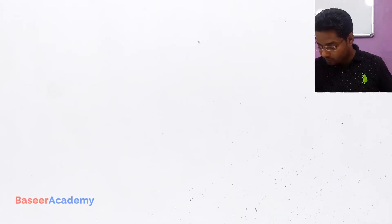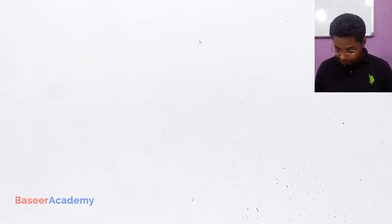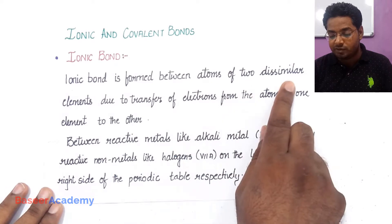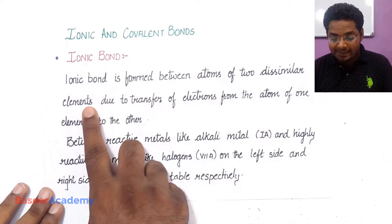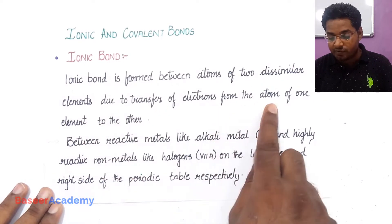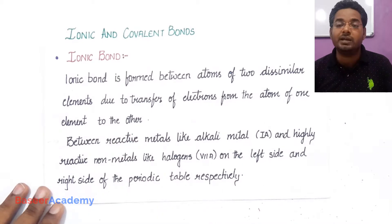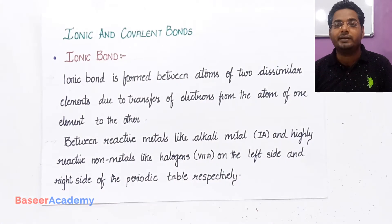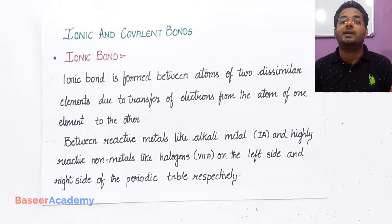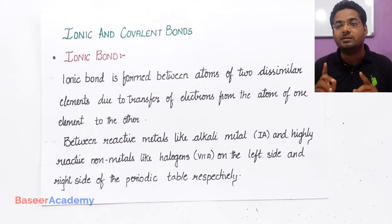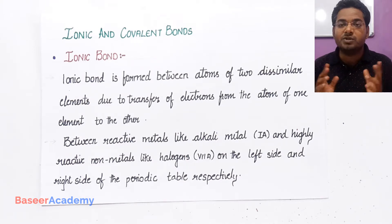Ionic bond is formed between the ions that have been formed this way. The definition states that the ionic bond is formed between atoms of two dissimilar elements due to transfer of electrons from the atom of one element to the other. It clearly says that the ionic bond can form only between two dissimilar atoms — dissimilar atoms means two different atoms, atoms which are not similar.